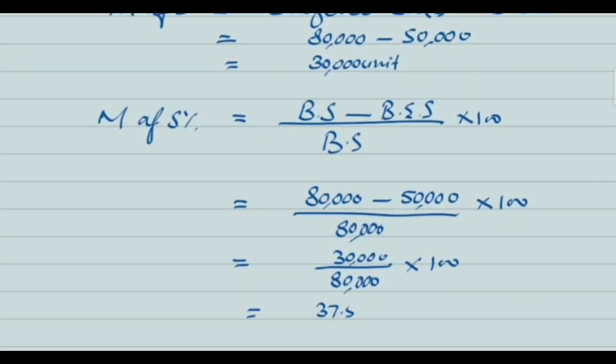In terms of percentage, to calculate the margin of safety use the formula: budgeted sales minus break-even sales divided by budgeted sales, and that gives you the margin of safety percentage.